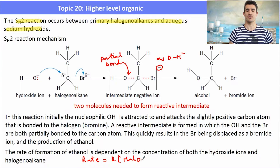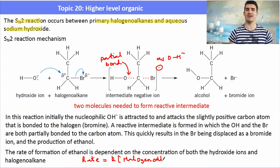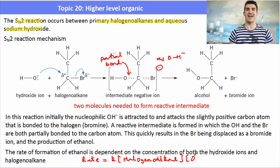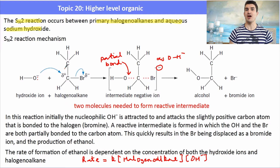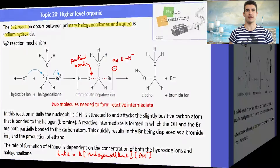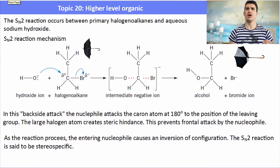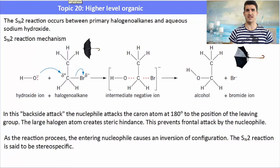After the intermediate is formed, the bromine — the leaving group — simply leaves, and we form a covalent bond between the carbon and the oxygen. The rate of formation of ethanol is dependent on both the concentration of the hydroxide ions and the concentration of the halogeno alkane, so the rate equals k times the concentration of both reactants.